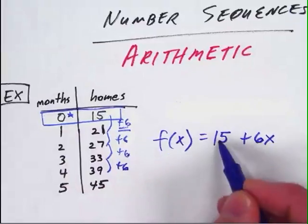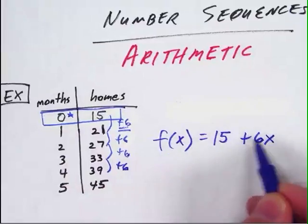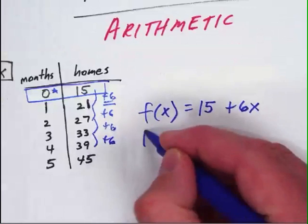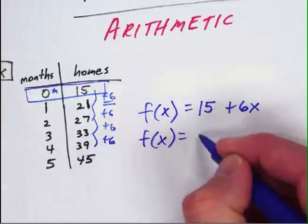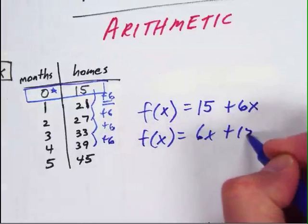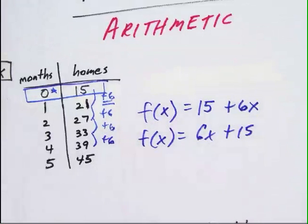Now this is what it starts at, or the initial value. This is what it goes by, often called the generator, and then times the number of months. Now most mathematicians will just rewrite that as f of x equals 6x plus 15, but you could leave it either way as fine.